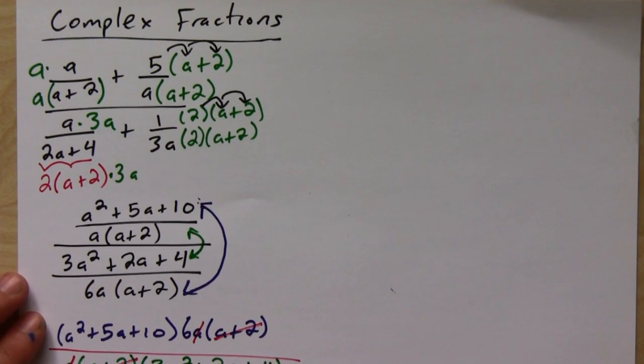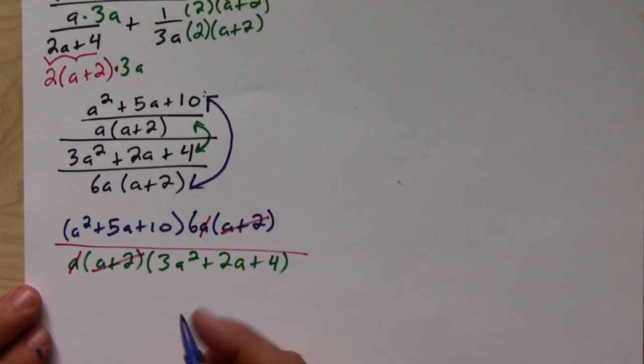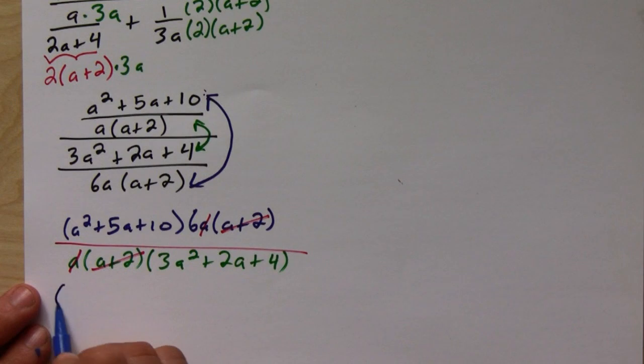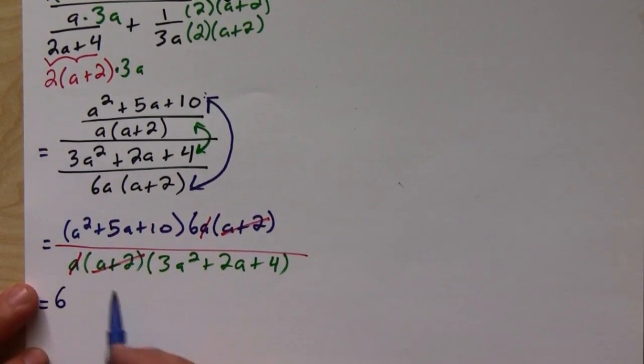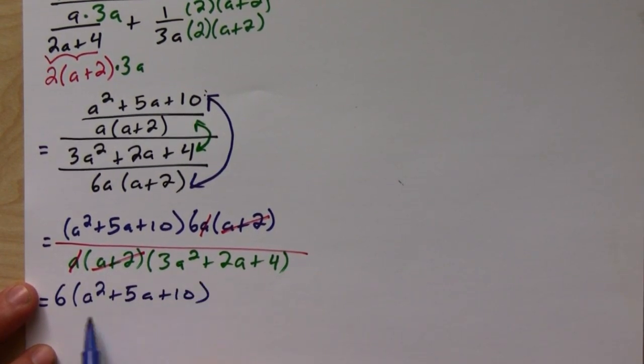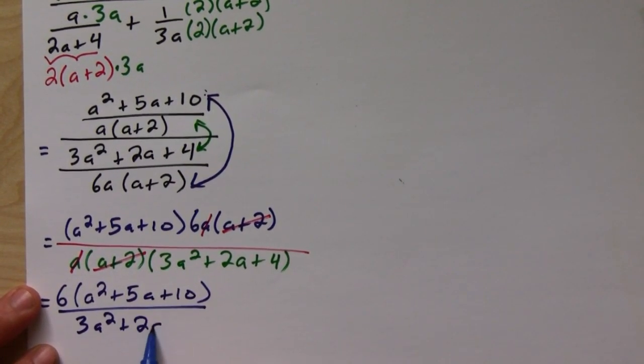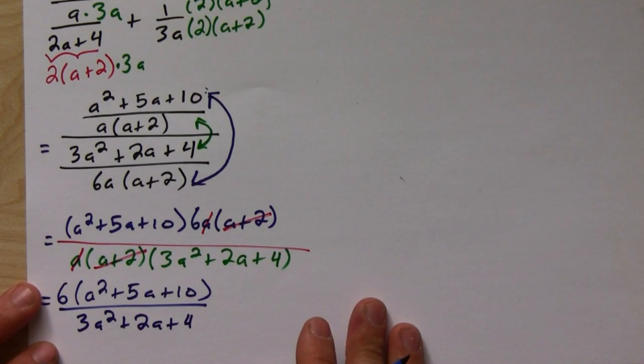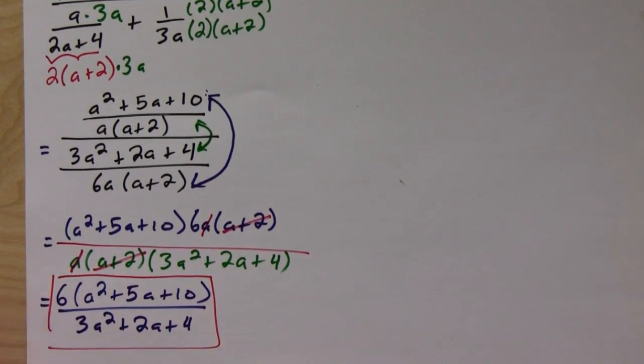So we're going to have 6 times (a squared plus 5a plus 10) all over (3a squared plus 2a plus 4). And that's it, that's our answer.